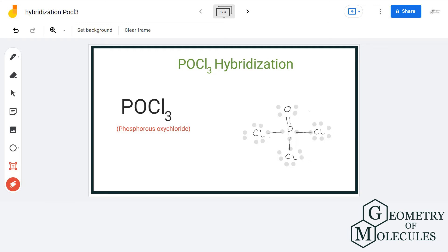Hello guys, welcome back to our channel. In this video, we will discuss the hybridization of POCl3. It is the chemical formula for phosphorous oxychloride.